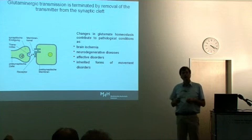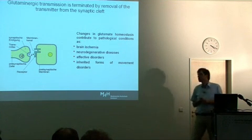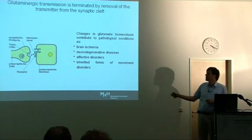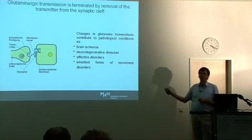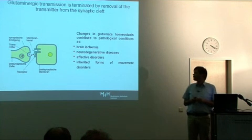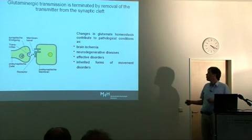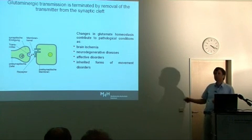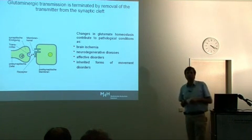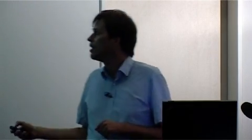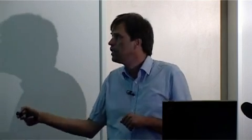For example, brain ischemia, in which glutamate transport appears to reverse. Changed glutamate concentration has been suggested as a pathophysiological process in neurodegenerative disorders or affective disorder. And lastly, in recent years, monogenetic forms of movement disorders have been shown to be caused by mutations in one particular glutamate transporter — and I will speak about this particular aspect within my talk.